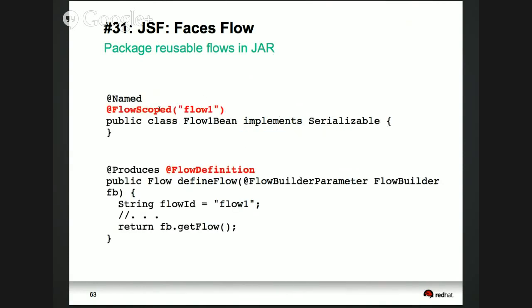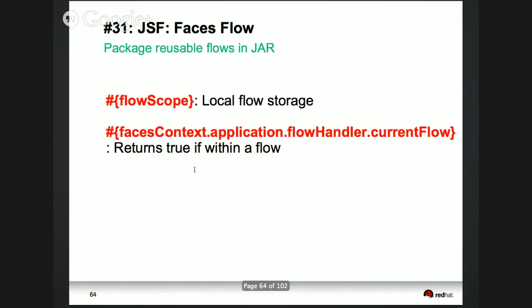There is a @FlowScoped annotation to store flow-scoped data where the bean's lifecycle is tied to the flow scope. You can also define flow programmatically — figuring out at runtime what your flow is going to look like, what pages will exist.